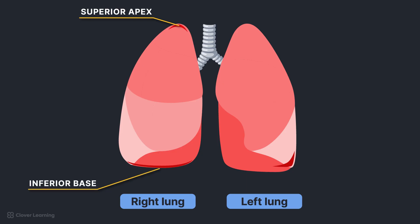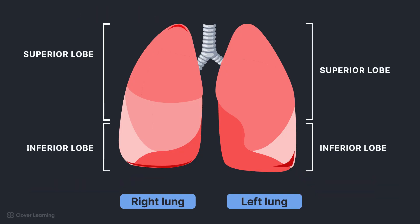The bases of healthy lungs form points called the costophrenic angles, which is a key area to evaluate on radiographic images of the chest. Both lungs are separated into superior and inferior lobes. The right superior lobe is divided further, creating a middle lobe. The right lung is shorter and broader than the left lung because of the position of the liver and heart. During inspiration, the lateral margins descend into the parietal pleura, forming the costophrenic angle. The mediastinal surface is concave, with a depression called the hilum that accommodates the bronchi, pulmonary blood vessels, lymph vessels, and nerves.